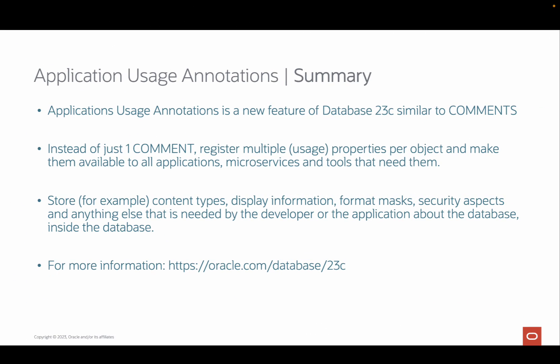To summarize, application usage annotations is a new feature in the Oracle Database 23c release, similar to the existing comments functionality. Instead of just having one comment, multiple name-value pairs can be added per object and are available to all applications, microservices, and tools using a single data dictionary view containing all information. Use the new functionality to store information like content types, format masks, security aspects, or whatever your design needs — about the database, inside the database — with no performance degradation.